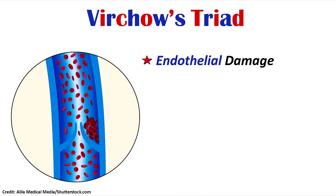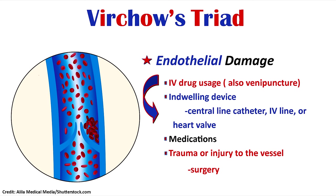Lastly, we have endothelial damage. When thinking about this factor for the development of a clot within the deep vein, you need to think of something causing either direct or indirect damage to the lining of the vein. Regardless of how it's affecting that endothelial lining, it's going to stimulate the platelets and the coagulation process. Things that can do that include IV drug usage — I have seen this in young patients who use IV drugs and develop blood clots. Also venipuncture, indwelling devices such as a central line or IV line, a heart valve, medications that are hard on the veins, or some type of trauma or injury to the vessel like surgery.